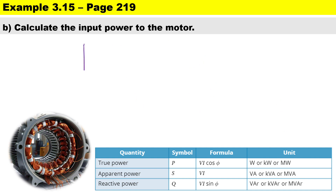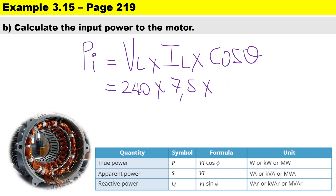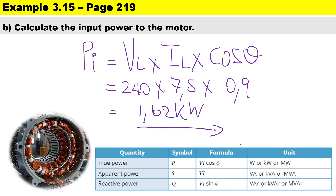To calculate the input power of the motor — remember, for motors we use input power, for generators we use output power — it's the supply voltage multiplied by the supply current times the power factor: 240 volts × 7.5 × 0.9 = 1.62 kilowatts. That is the actual power consumed in the circuit.